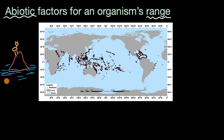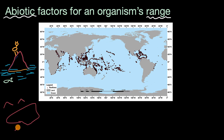Likewise, there might be some other creature inside the water that can't go on land, so its range is going to be limited to that water. You could even imagine it could be some type of inland pond or lake. This is all land on the outside, and this is water right over here. If this thing needs to live in the water, its range is definitely going to be limited to that water.